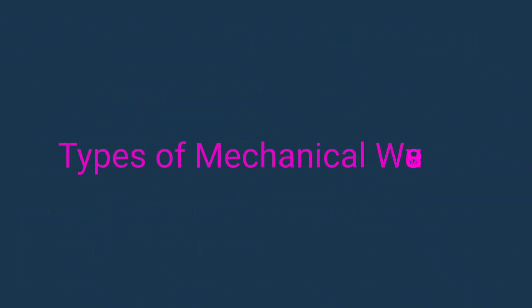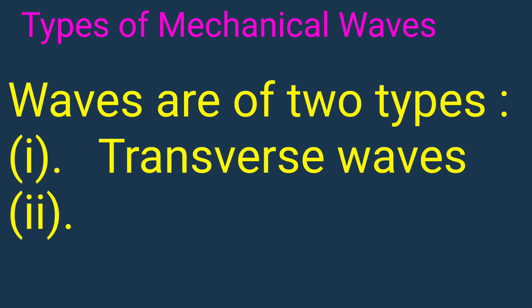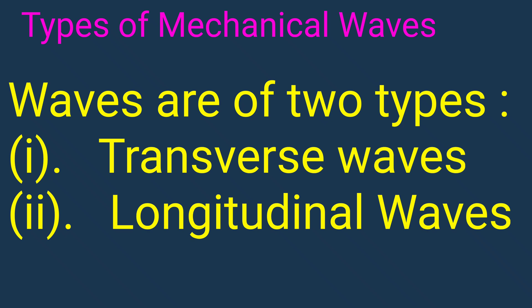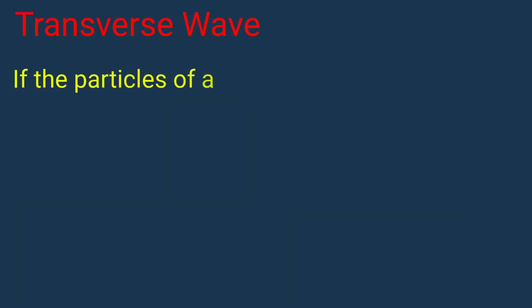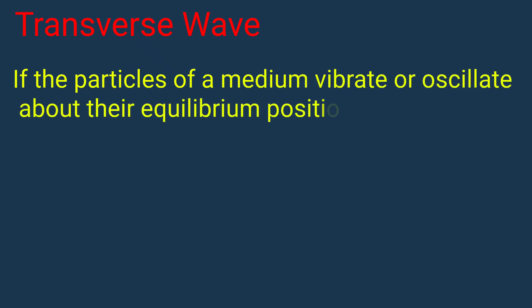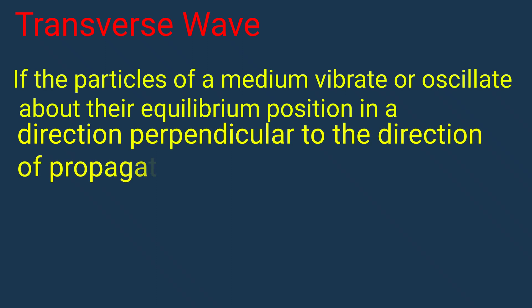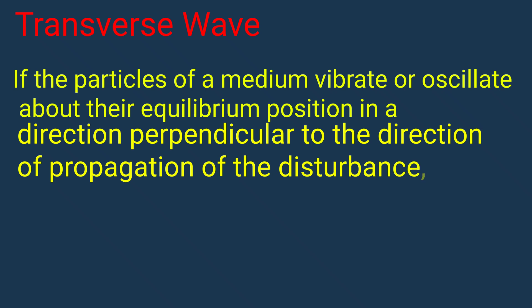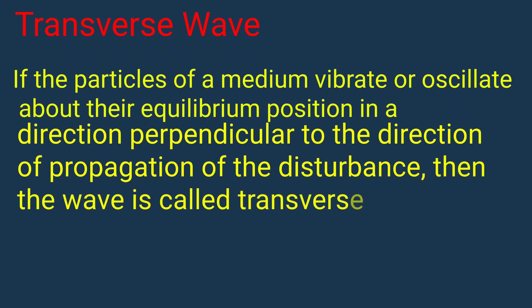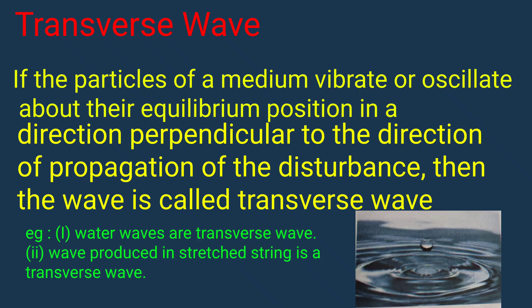Waves are of two types: transverse waves and longitudinal waves. If the particles of a medium vibrate or oscillate about their equilibrium position in a direction perpendicular to the direction of propagation of the disturbance, then the wave is called a transverse wave. For example, water waves and waves produced in a stretched string are transverse waves.